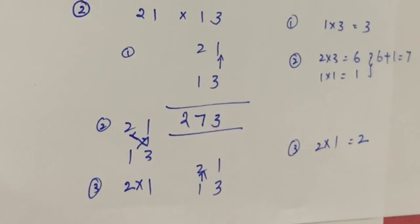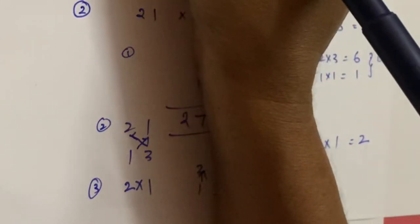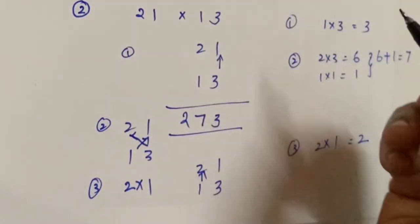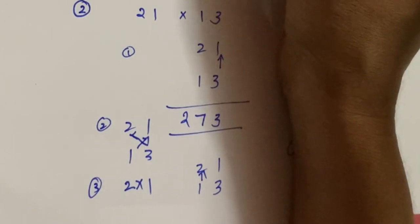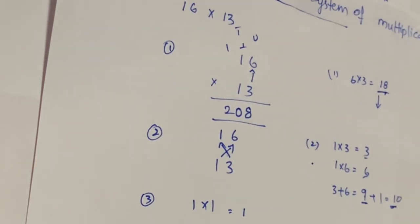Here we are only taking two-digit numbers. If you need to multiply three-digit numbers, the same procedure applies with a little modification — we'll learn that in the next video lesson. Until then, happy studying! Practice this a little so that you can mentally calculate all these steps and get the answer within seconds.